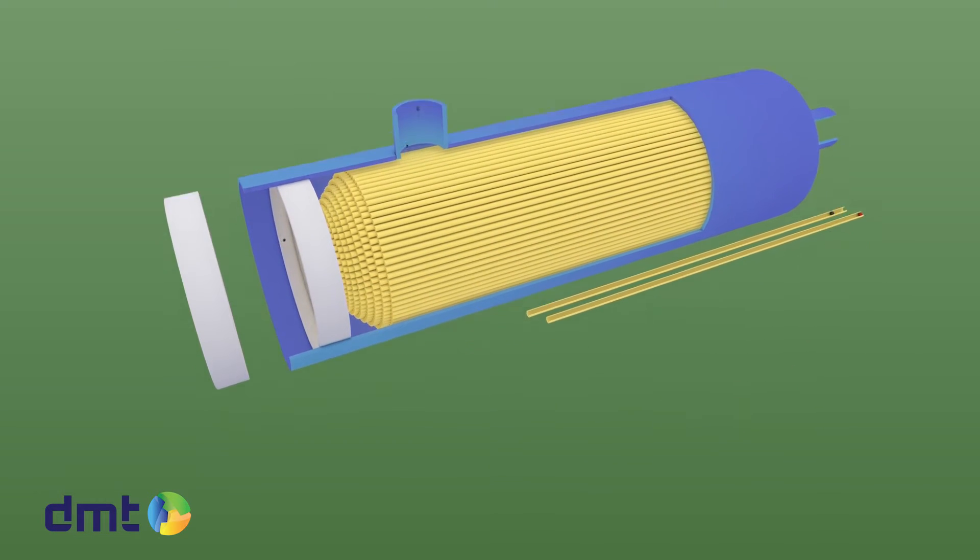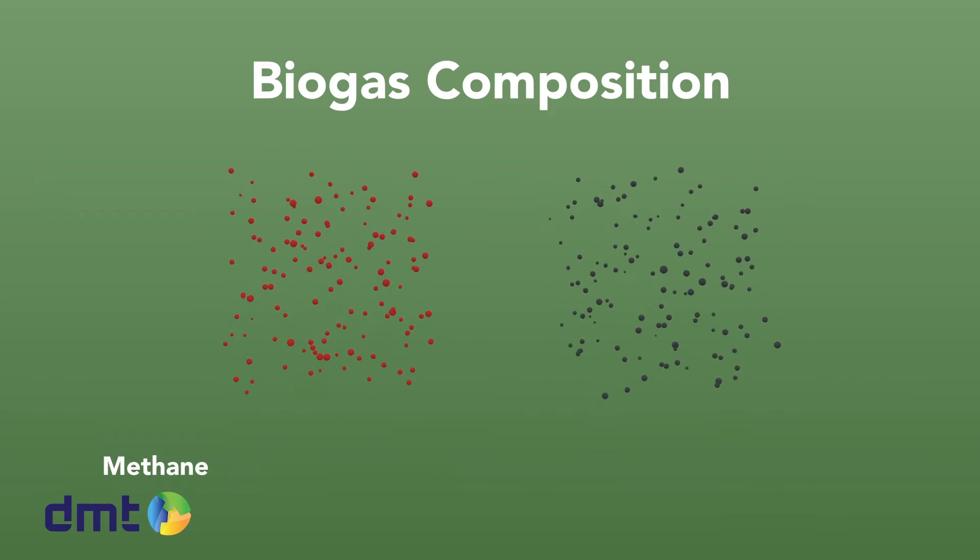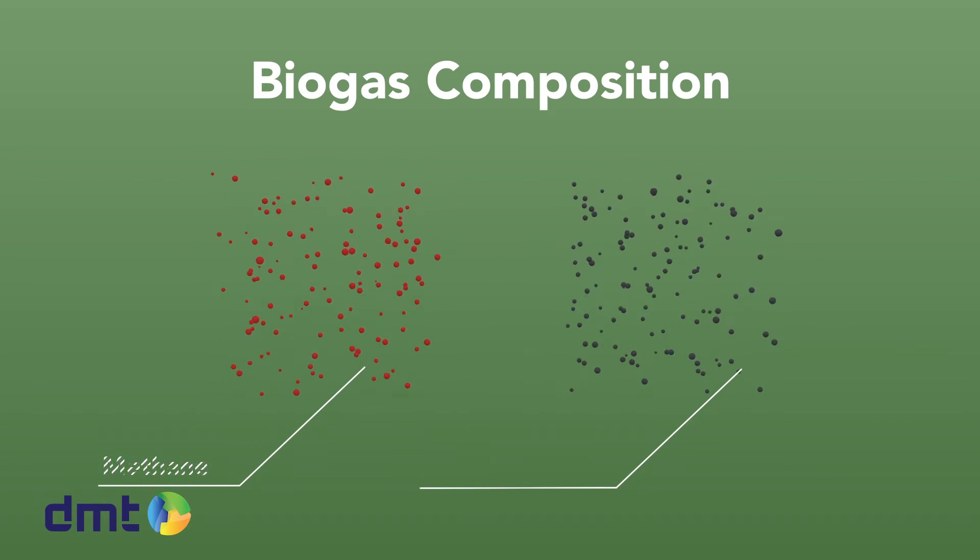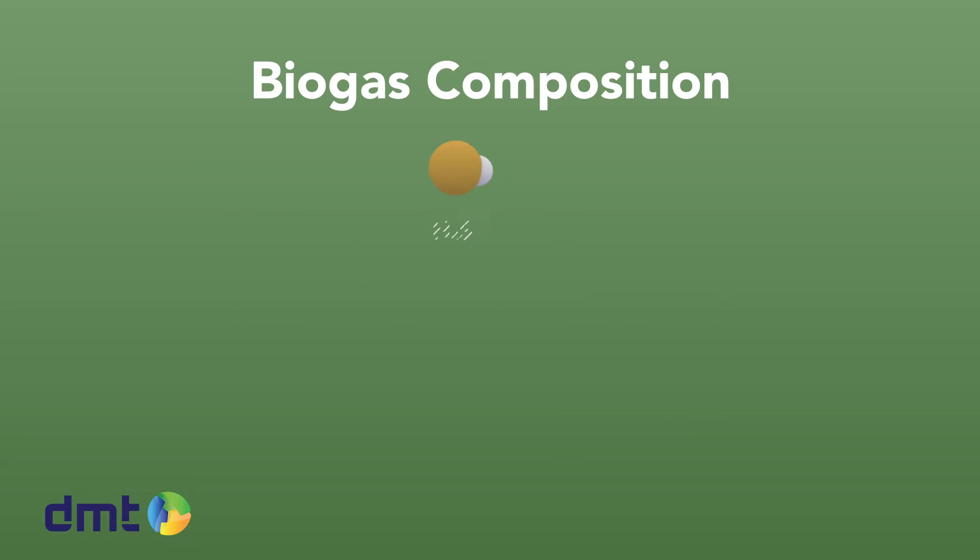As mentioned before, biogas consists mainly of methane and carbon dioxide. However, there are some other components that have to be removed before entering the membranes. For example, H2S, mercaptans and terpenes. The gas also contains water, preferably to be removed before entering the membranes. DMT's Carborex MS contains a pre-treatment section where these components are removed.